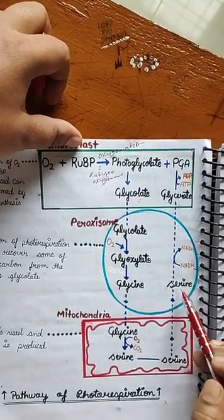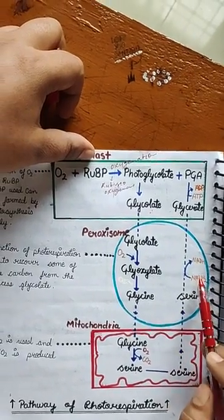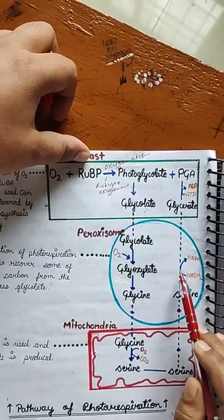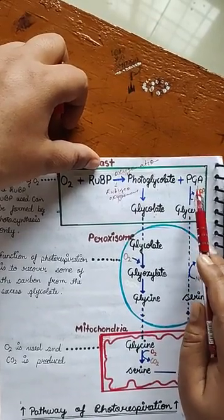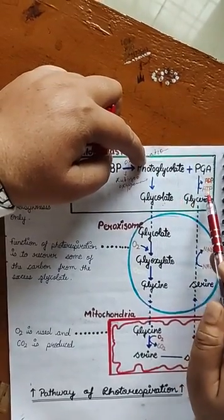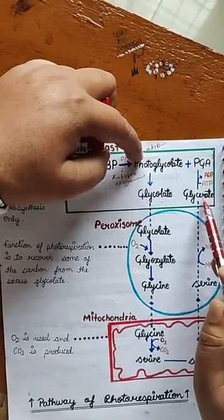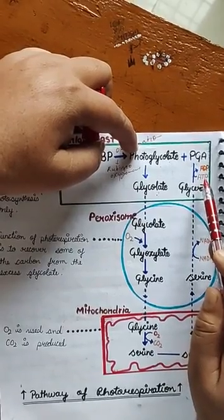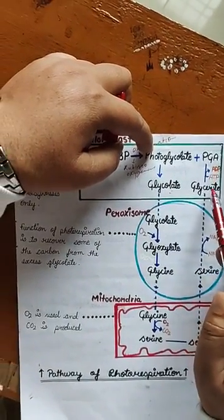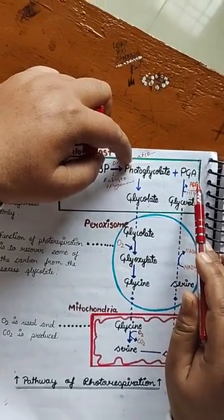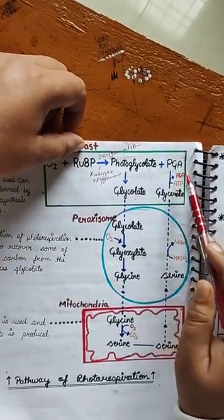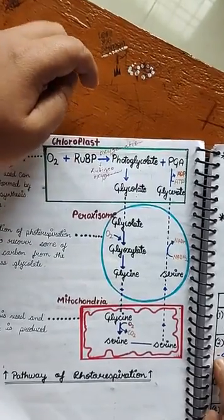अब ये serine enter कर जाएगी peroxisome में again। अब serine से glycerate बनेगा, और glycerate बनने के दौरान NADH2 से NAD बनेगा, यहाँ पर hydrogen का use होगा। और ये glycerate दुबारा से PGA में convert होगा। जब glycerate phosphate group को ATP से combine करेगा और ADP बनाएगा, तब phosphoglycerate बन जाएगा, that is also known as PGA।